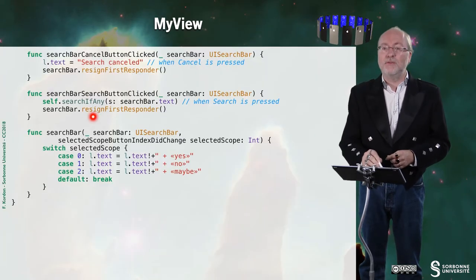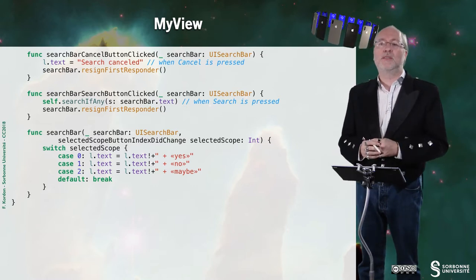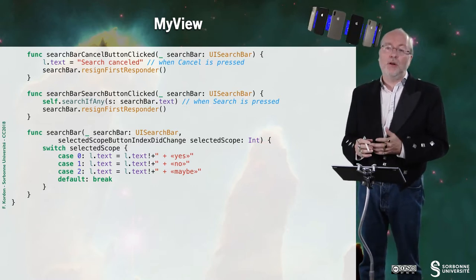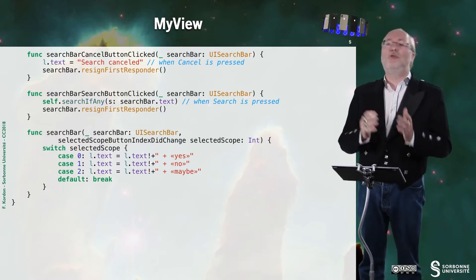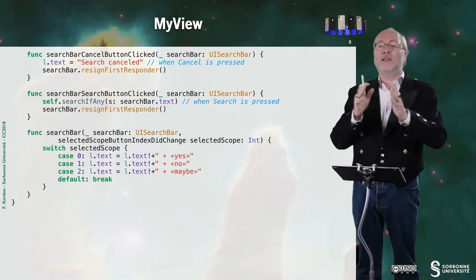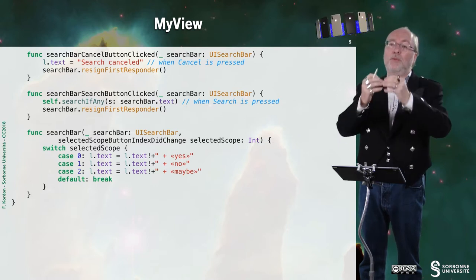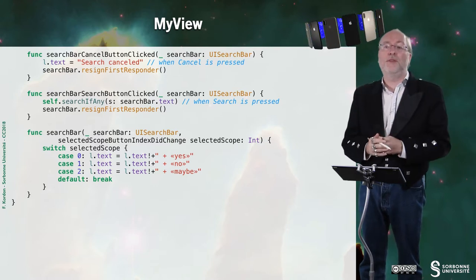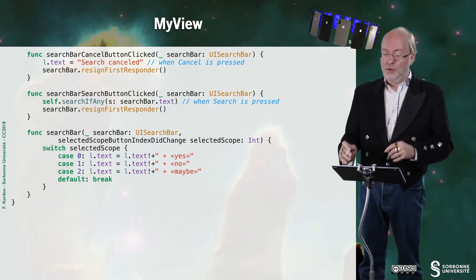And finally, this method is invoked when there is one scope button selected. So, it appears as an integer. So, it means that zero is the first button, one is the second button, two is the third button. Of course, there is a limited number of buttons, theoretically not. But in terms of the buttons, you can put in this scope bar according to the width of a small device. So, traditional programming, no problem.